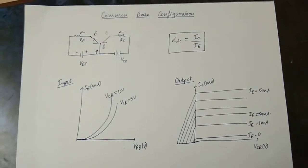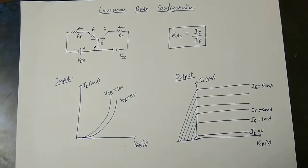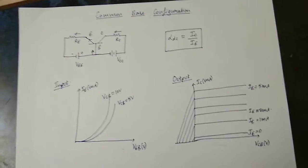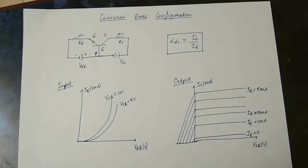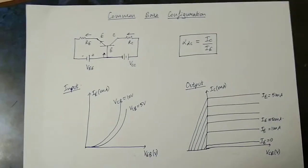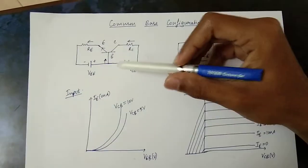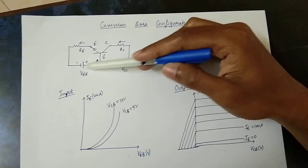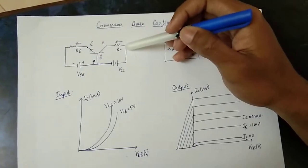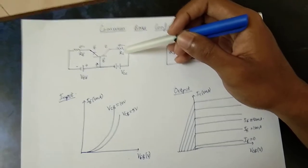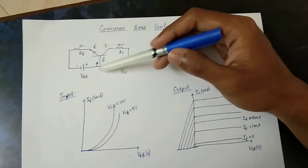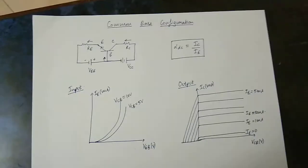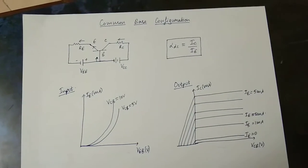In this transistor, we have three types of connections: Common Base, Common Collector, and Common Emitter configurations.